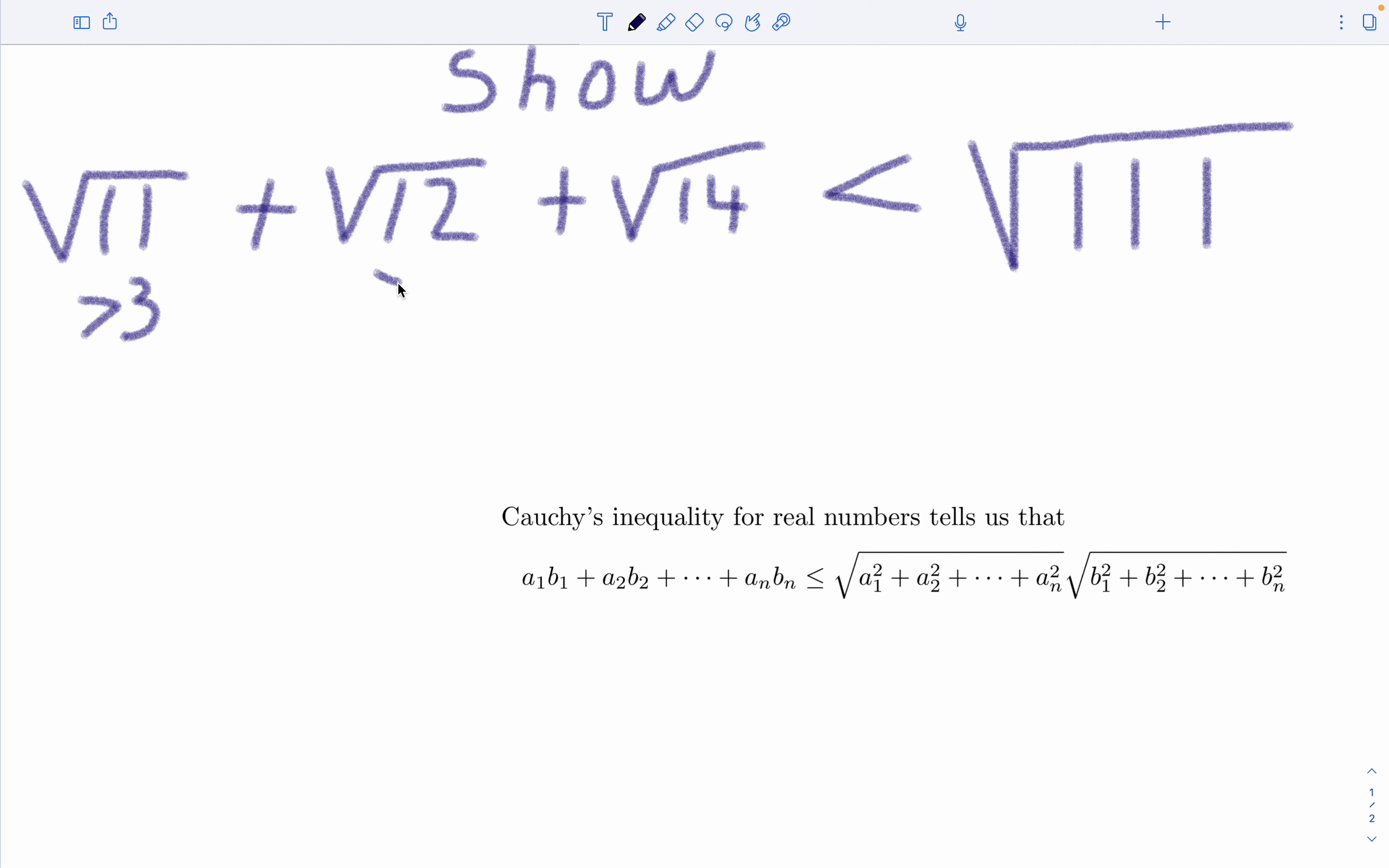Same for the square root of 12. And also the square root of 14 is close to 4 actually. We'll go ahead and say greater than 3. So all three of these terms are greater than 3, which means all three of these terms must sum up to be greater than 9.